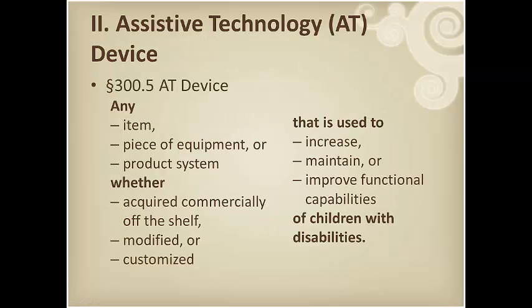Now let's go ahead and define assistive technology. AT is anything that helps someone do a task better, faster, or more efficiently, that might otherwise be difficult or impossible to do without it. An AT device is any item, piece of equipment, or product system, whether acquired commercially off the shelf, modified, or customized, that is used to increase, maintain, or improve functional capabilities of children with disabilities.